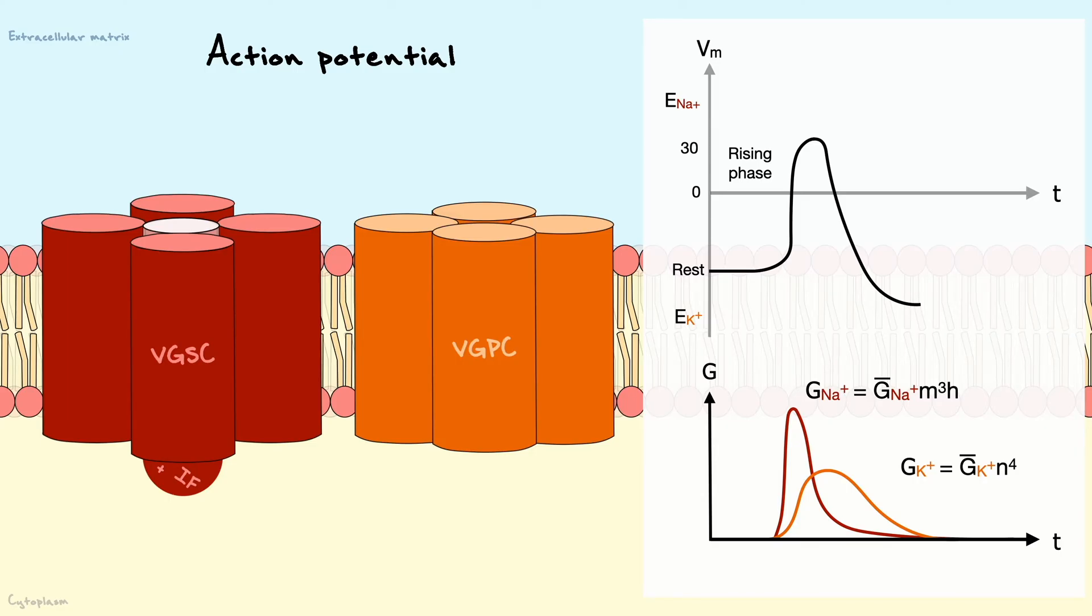Note that potassium channels do not open at the peak of the potential, they open earlier around at the negative 20 millivolts range.